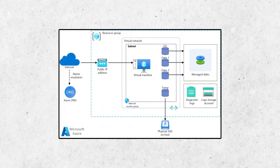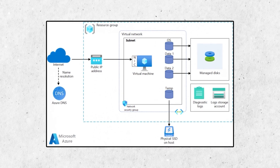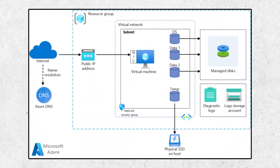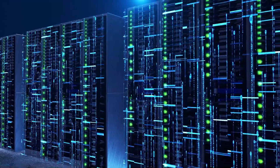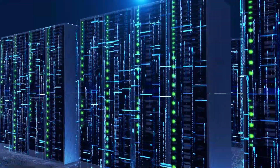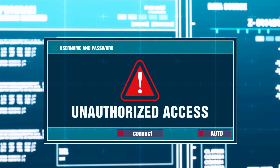With VNet, users can logically isolate resources and control communication between virtual machines, web apps, and other resources within their virtual network and in the Azure environment. Imagine you have virtual machines running different services such as web servers and databases. By placing these virtual machines within a VNet, you can create a secure boundary that prevents unauthorized access from the internet, ensuring that sensitive data and applications are protected from external threats.